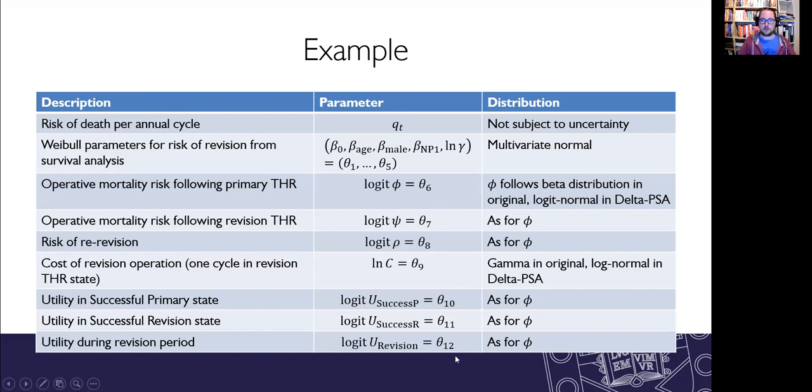So in total we have 12 parameters which are subject to uncertainty in this model. The first five of them are parameters for that Weibull survival model and then we have two which relate to operative mortality risk. One applies right at the beginning of the model so it didn't show up in that transition matrix. Then we also have the risk of re-revision. Then we have three health state utility values down here. We have a cost for being in that revision state. You'll notice that we've taken some logit transformations for parameters which originally followed a beta distribution but they now follow a logit normal distribution. Also this cost followed a gamma distribution in the original model but it now follows a log normal distribution.